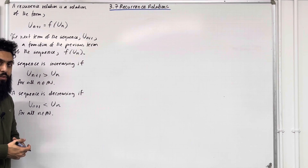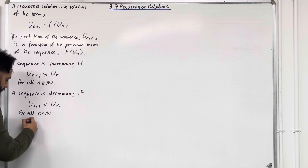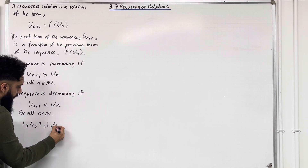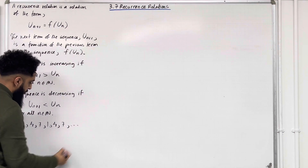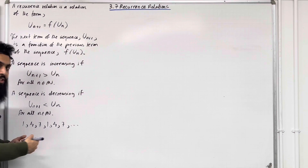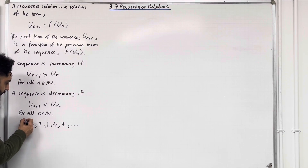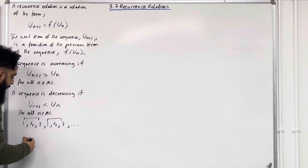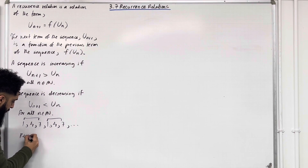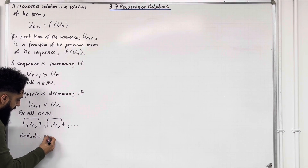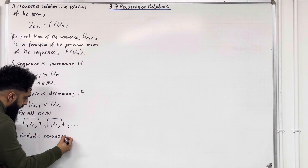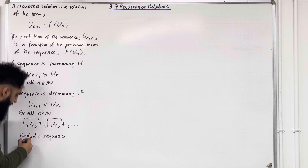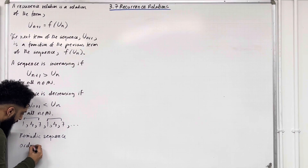Now we're going to look at a periodic sequence. For example: 1, 4, 7, 1, 4, 7, and so on. What we notice is that there's a repetition in cycles of 3. We call this a periodic sequence. That repetition is called the order of the sequence. In this case, the order is equal to 3.